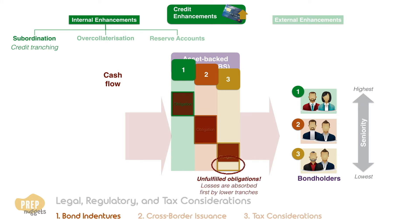The most senior tranches in this structure can receive very high credit ratings, and so their yield is the lowest. This is because the probability that losses will be so large that they cannot be absorbed by subordinate tranches is very low. Consequently, the subordinated tranches must have higher yields to compensate investors for the additional risk of default.